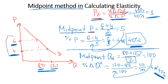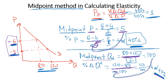To recap: whether you choose to work with price or quantity first, find the midpoint for that variable by adding the two values and dividing by 2. For price, we added 6 and 4, divided by 2, and got a midpoint of 5. Then to find the percentage change, take the difference between the two numbers — you can do 6 minus 4 or 4 minus 6, just ignore any negative sign — and divide by the midpoint. Do the same for quantity: find the midpoint, take the difference, divide by the midpoint to get the percentage change. Then plug both into the formula to find your elasticity.